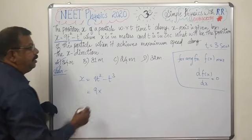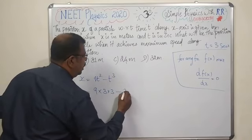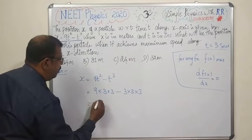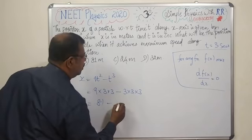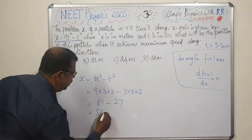x equals 9 into 3 squared minus 3 cubed. 9 into 3 into 3 minus 3 into 3 into 3. This is 81. This is 27. The answer is 54 meters.